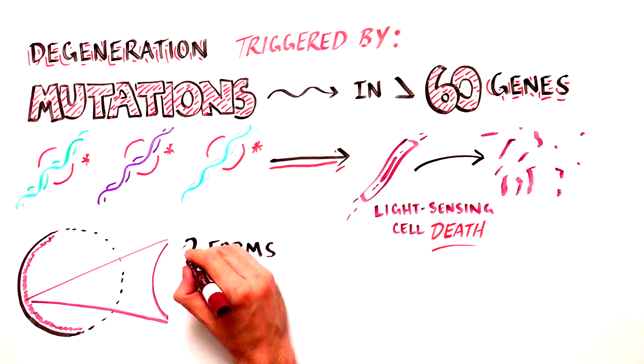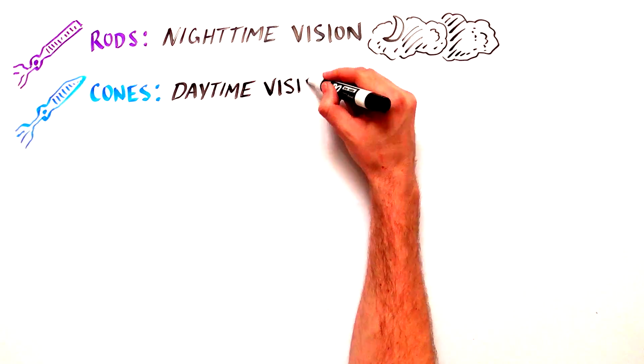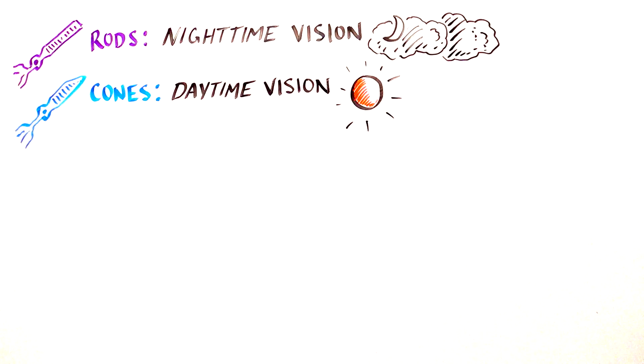Light-sensing cells come in two forms: cones and rods. Cones allow us to see in daylight, and rods provide nighttime vision.